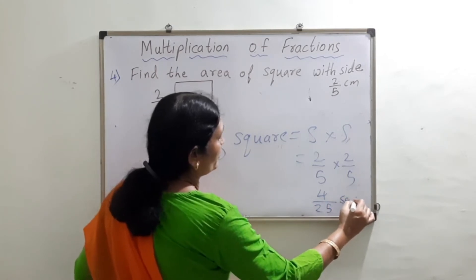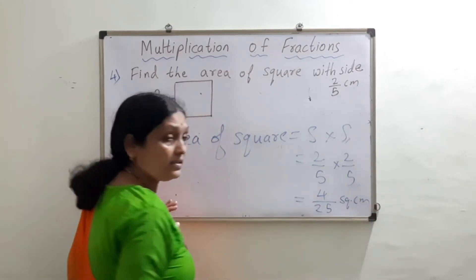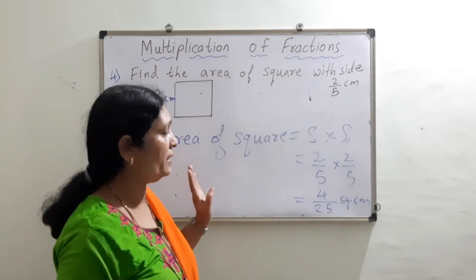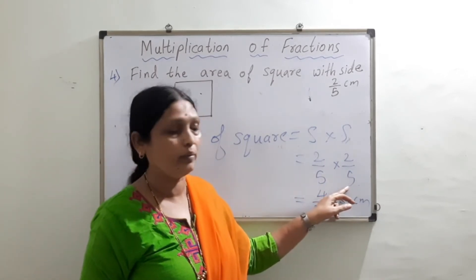So that's 4 upon 25 square centimeter. Understood, children? Simply multiplying numerator by numerator and denominator by denominator. If we are not able to simplify, just leave it as it is.